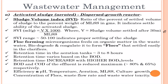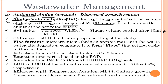The sludge volume index is the next important term. It is the ratio of the percent settled volume of sludge to the percent weight of MLSS in grams. It indicates the settleability of the activated sludge. The formula is: SVI = V × 1000 / MLSS. This is a way of calculating the volume index. No numerical problems typically come from this topic.